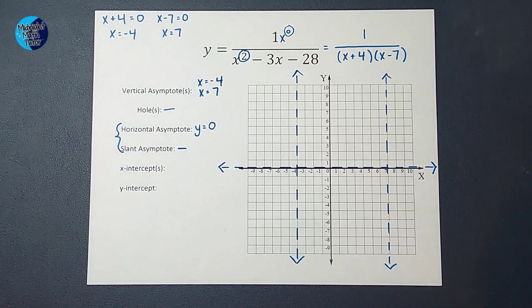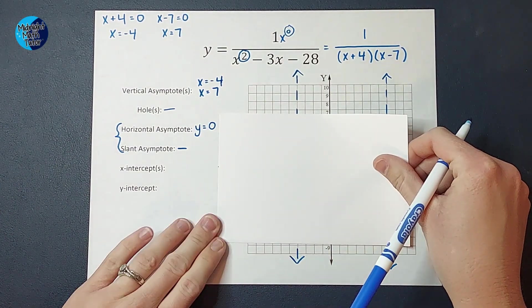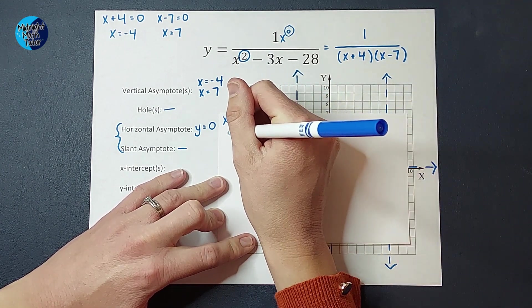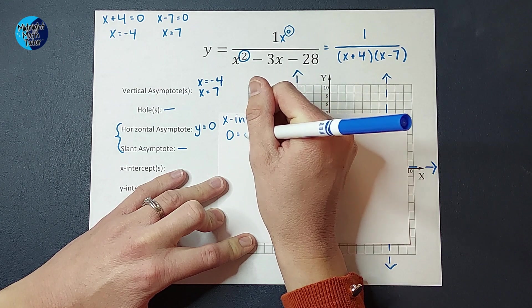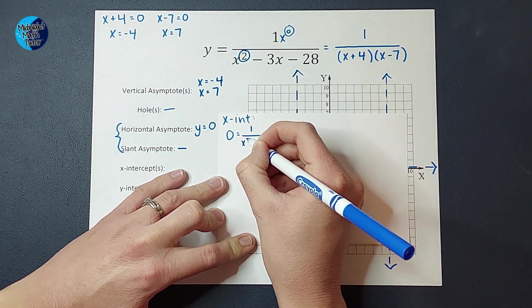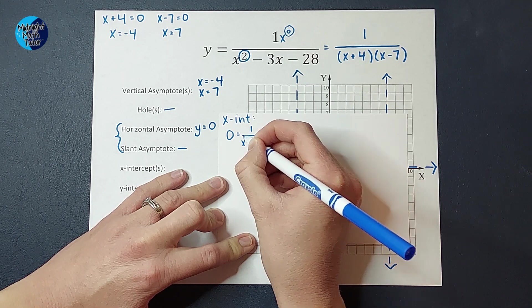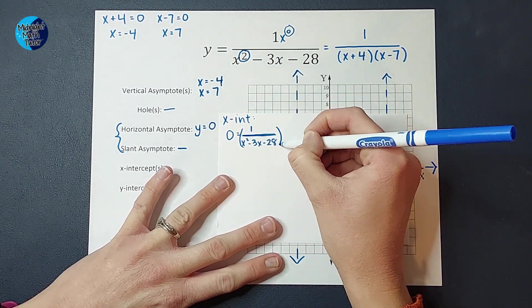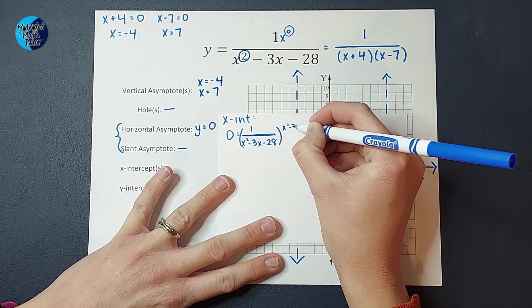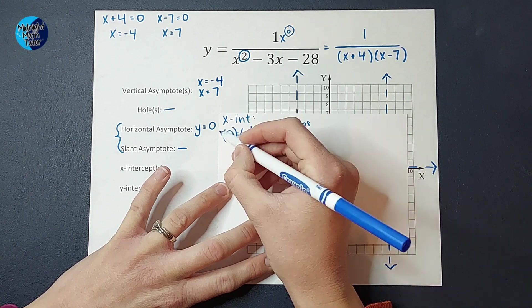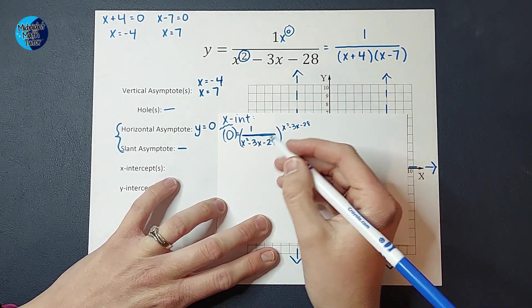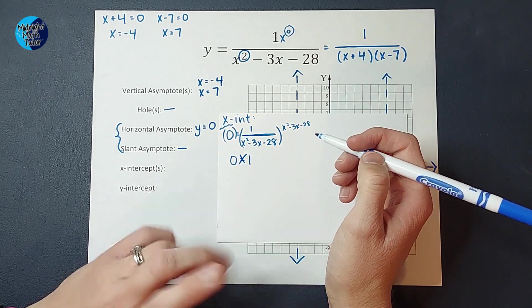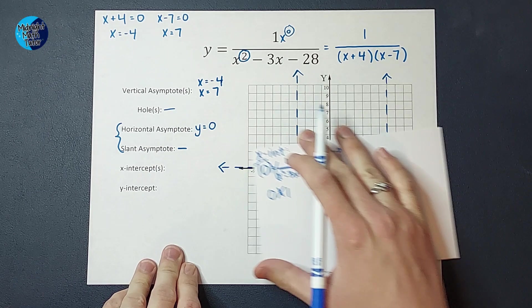Next thing we're going to do is figure out our x-intercepts. So to find my x-intercept, I am going to set y equal to 0. So I'm going to have 0 equals 1 over x squared minus 3x minus 28. Okay. Now to solve this, I wish I'd written that over. It's fine. To solve this, I would go ahead and multiply both sides by this, right? By the x squared minus 3x minus 28. And I would multiply this side by 2. I'm not going to write the whole thing out, but I'm multiplying it by that. But then I end up with 0 equals 1, which last time I checked, 0 does not equal 1. So what does that tell me? Well, that tells me that there is no x-intercept.